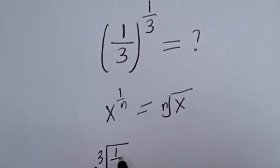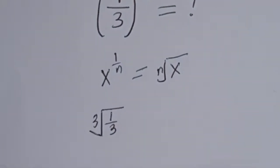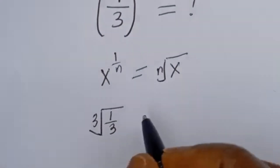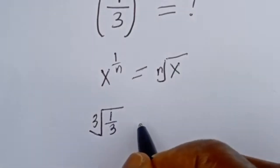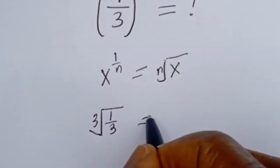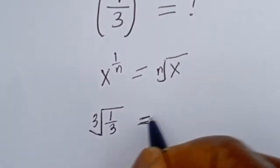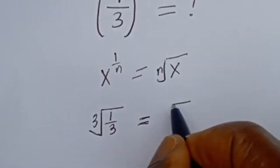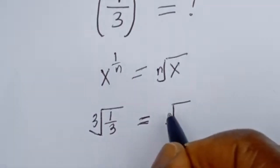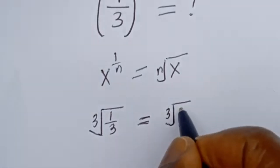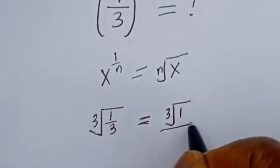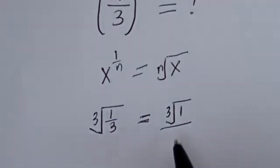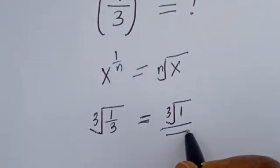...1 over 3. And of course this is equal to the cube root of 1 divided by the cube root of 3.